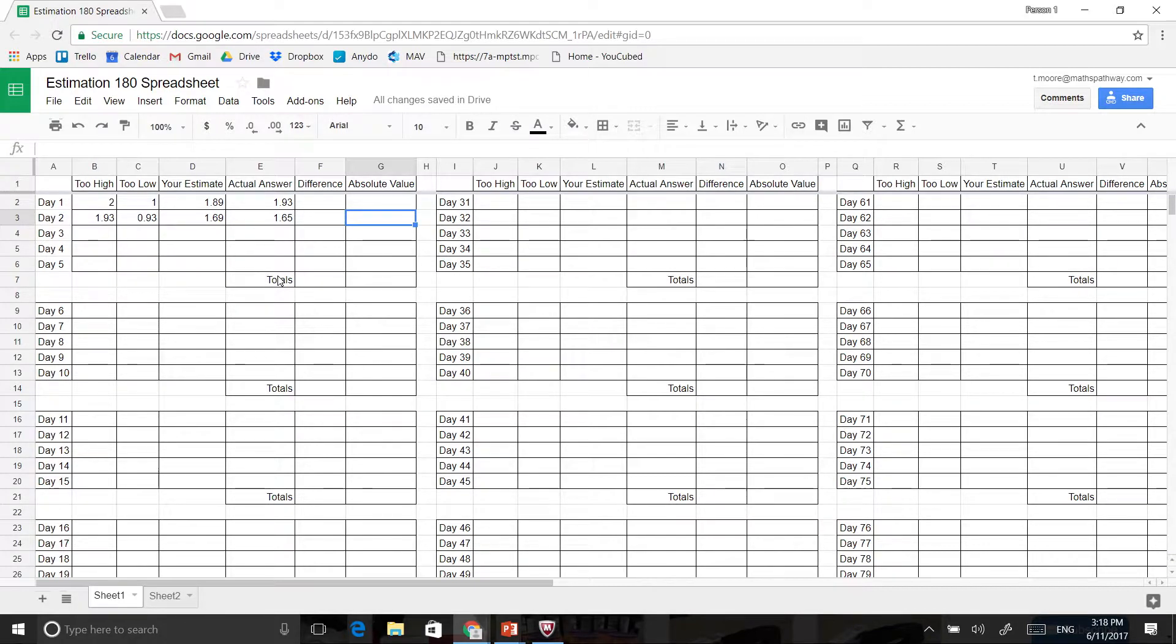Now, as you can see here, I've gone through and entered my estimations from the last video that I did. So I put too high was two metres for Mr. Stadel, too low was one metre, and my estimate was 1.89. But the actual answer was 1.93. Whereas for Mr. Stadel on day two, I said too high was 1.93, too low was 0.93, and my estimate for her was 1.69 metres, but her actual height was 1.65.